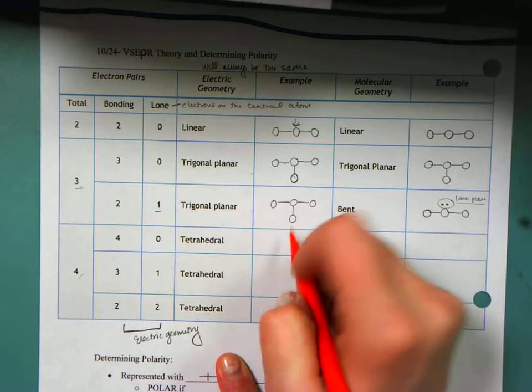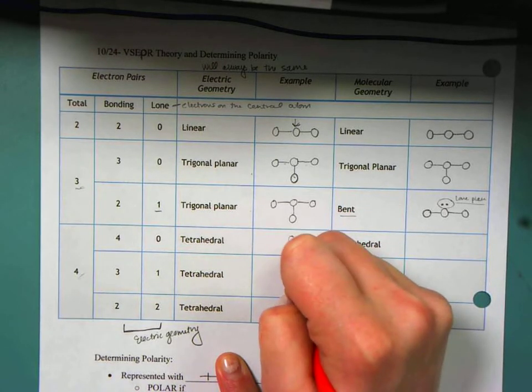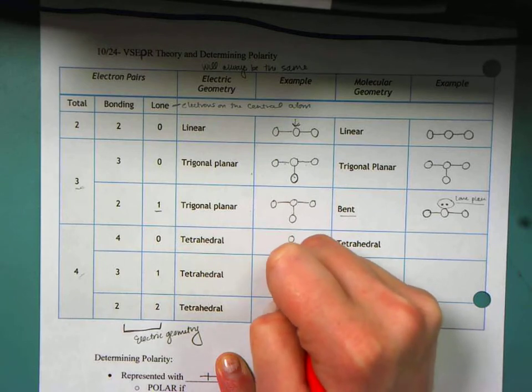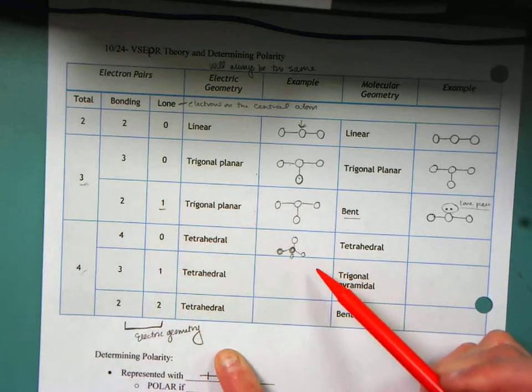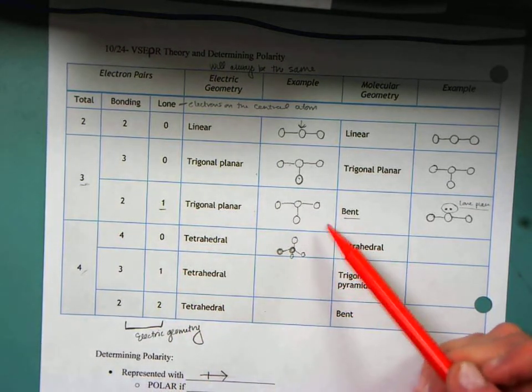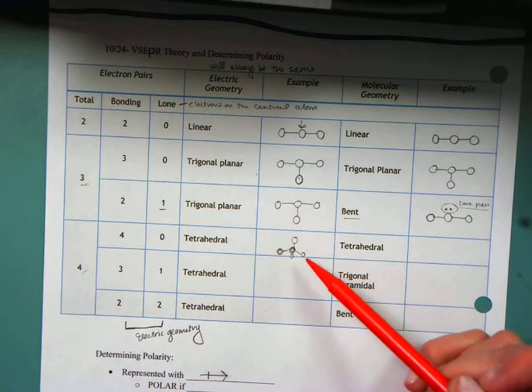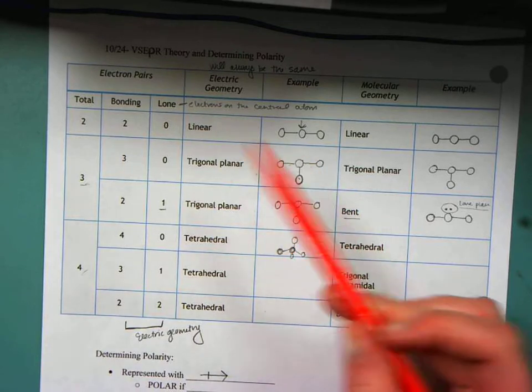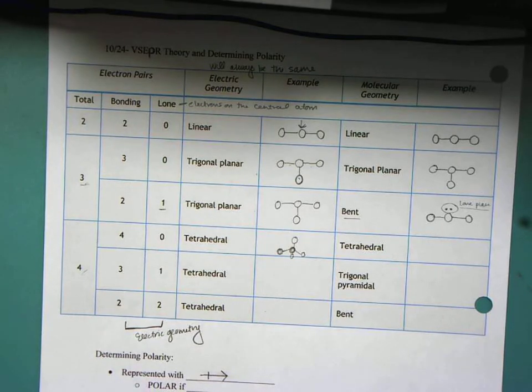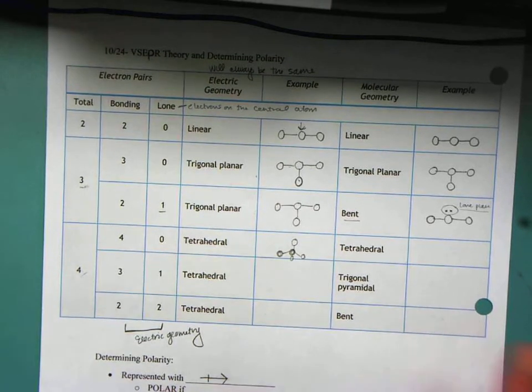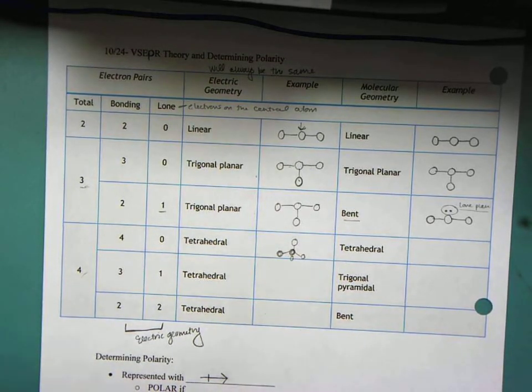Let's look at tetrahedral now. So tetrahedral should look something like this. Here's my central atom, and it's making four connections. I draw it like this because this is the furthest apart that these different atoms can be with each other.